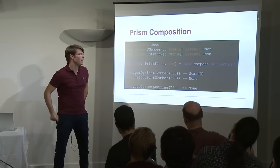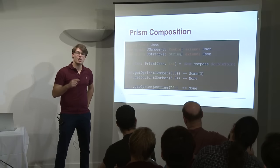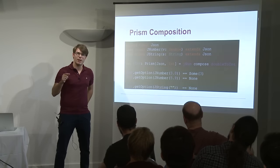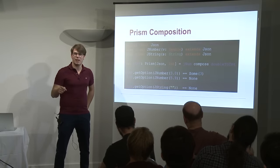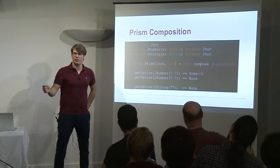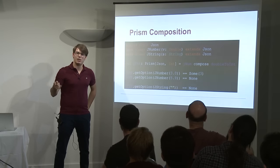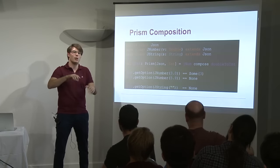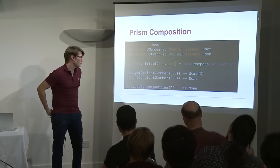What's cool is we can merge these two concepts. We define a prism between JSON and Double, and another prism between Double and Int. By composing them, we create a j_int prism between JSON and Int that will only match JSON values that are JNumbers and whose number is an integer. It's like nested pattern matching but without nested match statements.